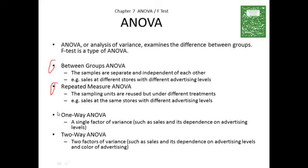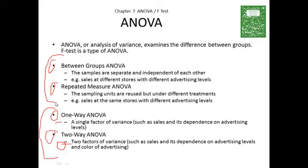The next distinction is one-way versus two-way ANOVA. One-way means a single factor of variance — one independent variable, such as levels of advertising (low, medium, high), and one dependent variable, such as sales. Two-way implies two factors driving the variance, such as sales depending upon both advertising level and the color of advertising. So now we have two independent variables and one dependent variable, sales, and we're testing whether sales is actually dependent upon these independent variables.